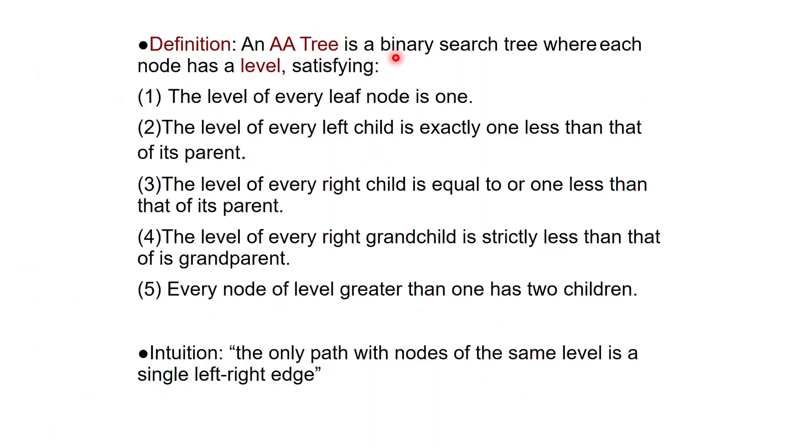And we're going to require that the level of every leaf is 1. The leaves are level 1 by convention. The level of every left child is exactly one less than that of its parent. So if you go from parent to left child, you always decrease the level.